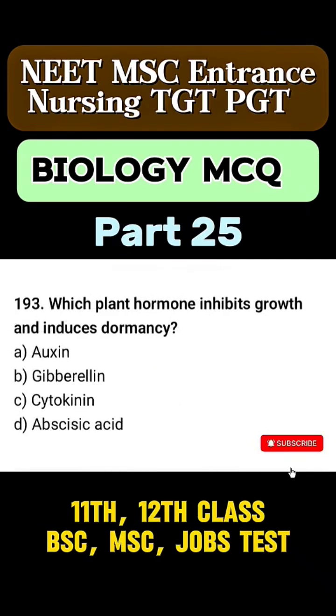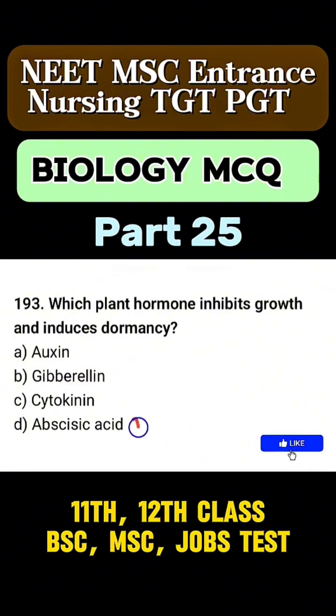Question 193. Which plant hormone inhibits growth and induces dormancy? Correct answer is option D. Abscisic acid.